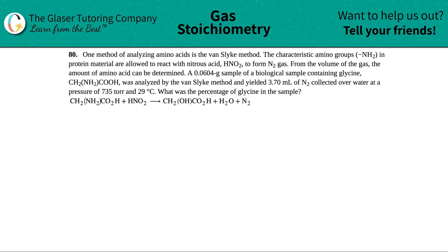Number 80. One method of analyzing amino acids is the Van Slyke method. The characteristic amino groups, which has the NH2 in it in protein material, are allowed to react with nitrous acid, which is HNO2, to form N2 gas. From the volume of the gas, the amount of amino acid can be determined.